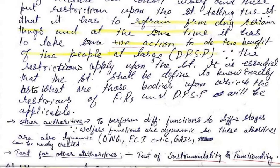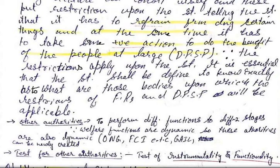Since the restrictions apply upon the state, it is essential that the state shall be defined, to know exactly what those bodies are upon which the restrictions of fundamental rights and DPSP will be applicable. In Article 12, it is not a rigid classification — it is an open classification because the word 'includes' has been written. It is an inclusive definition, plus the word 'other authorities' is an open word, and so more things can fall into Article 12.